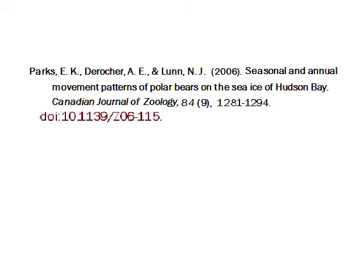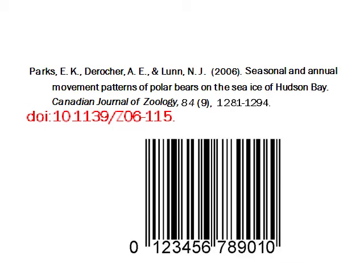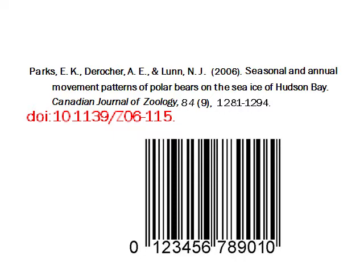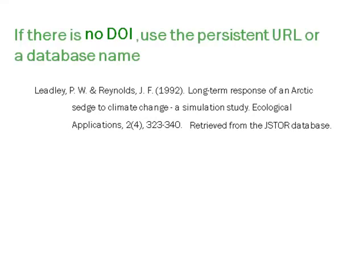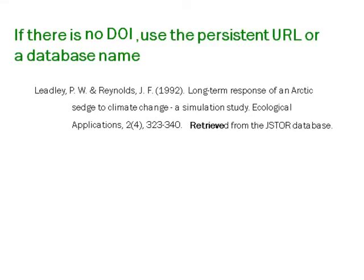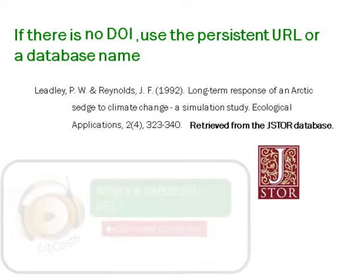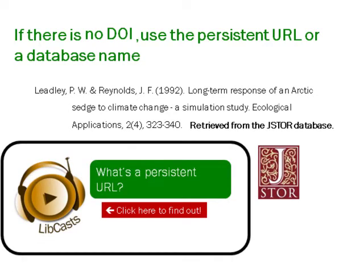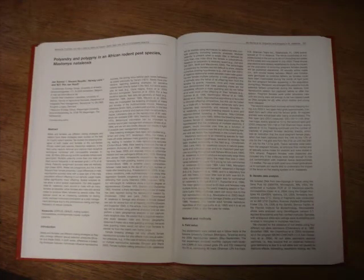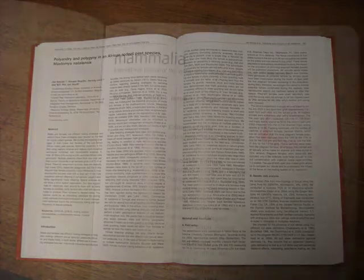Many electronic articles are now identified by an individual digital object identifier, or DOI, which is similar to a barcode on a product. The DOI is a unique numeral that represents the electronic article. Not every article has a DOI. If there's no DOI, APA style requires that the database name or the article's persistent URL be included in the citation. Articles available only in print do not have an electronic version, so there is no need for a DOI, URL, or database name in the citation.